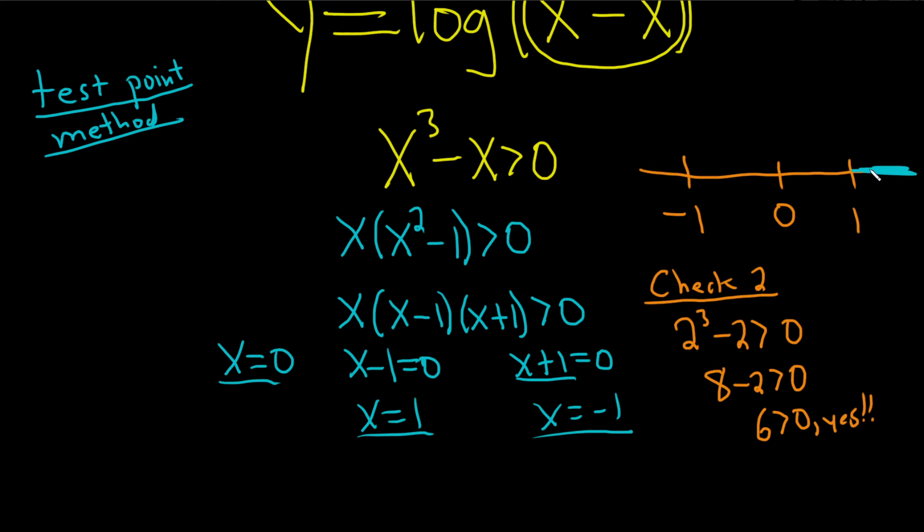So now what you're supposed to do is you're supposed to pick a number here. If it's true, you shade here. If it's not true, you don't. Then you pick a number over here. If it's true, you shade. If it's not true, you don't. And then you pick another number over here. And if it's true, you shade. And if it's not true, you don't. That is extremely tedious.